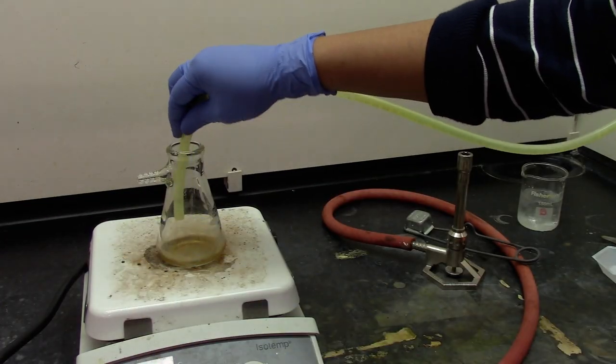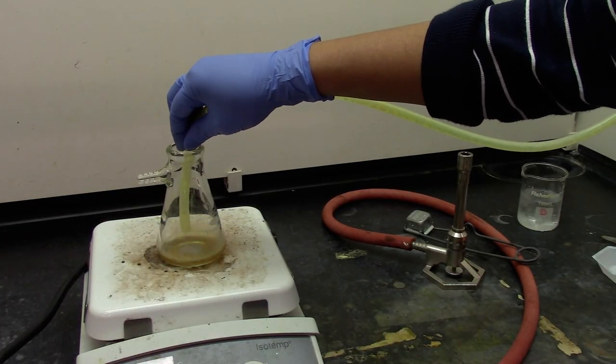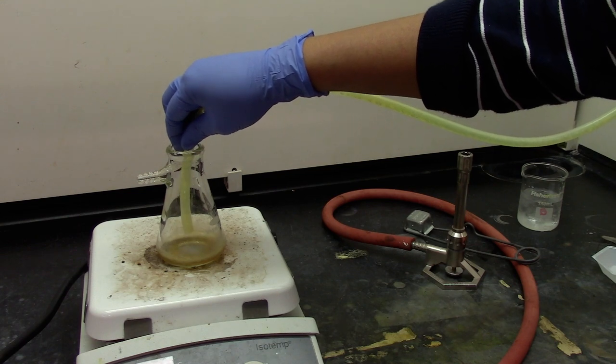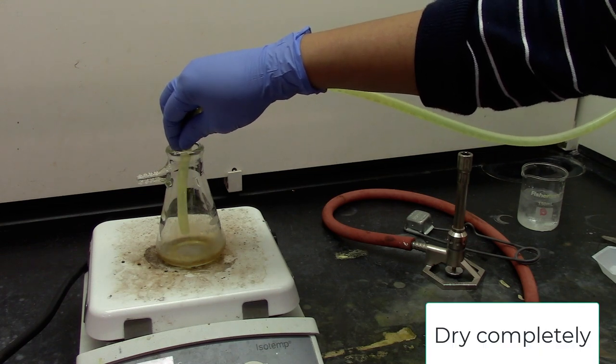Put the Erlenmeyer flask on a hot plate at around 80 to 85 degrees Celsius and blow air on top to dry it completely.